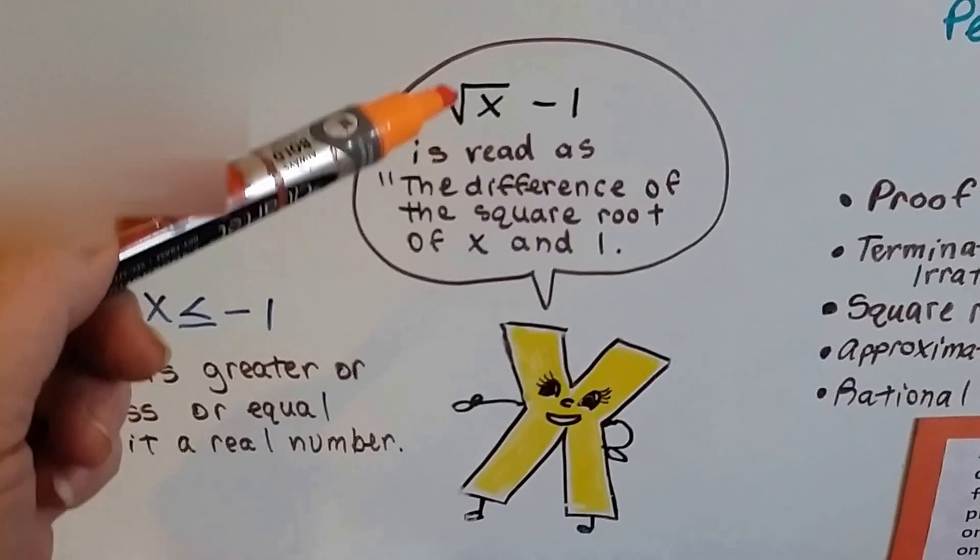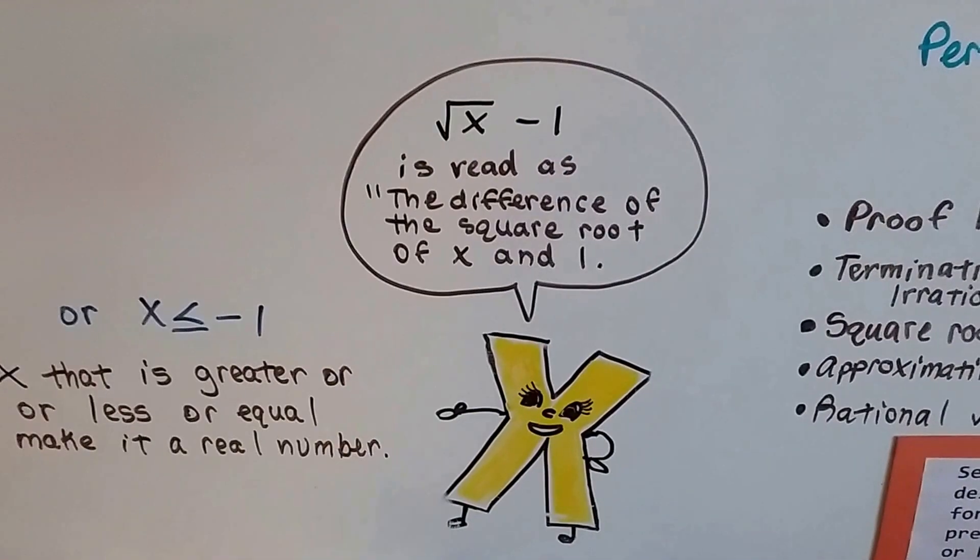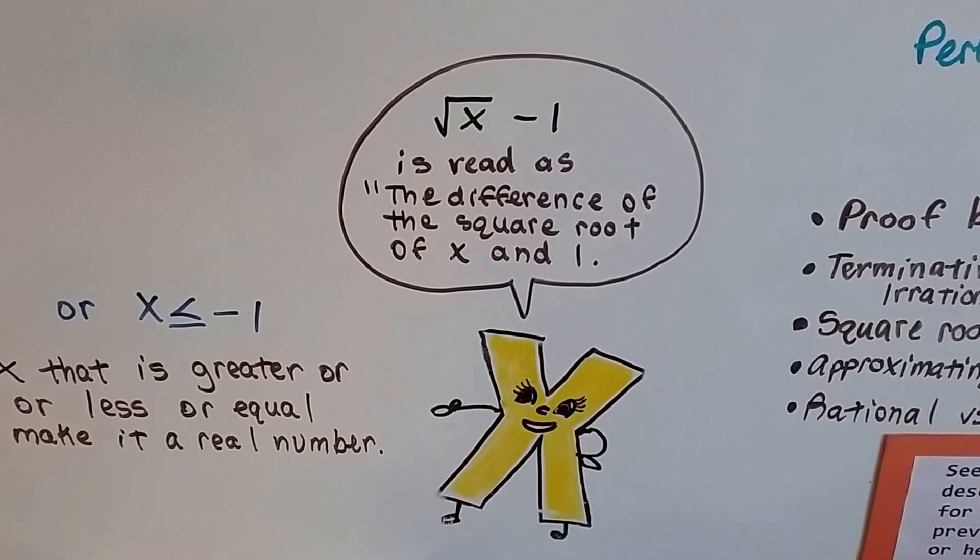Now, what if you see this? You see a square root symbol over an x, but then the minus 1 is way out here. We would read this as the difference of the square root of x and 1.